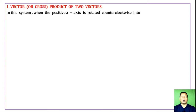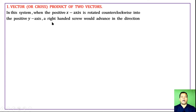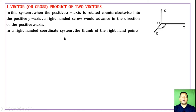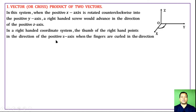Vectors or Cross-Product of 2 Vectors. In this right-handed coordinate system, when the positive x-axis is rotated counterclockwise into the positive y-axis, a right-hand screw would advance in the direction of the positive z-axis. The thumb of the right hand points in the direction of the positive z-axis when the fingers curl from the direction of the positive x-axis toward the positive y-axis.